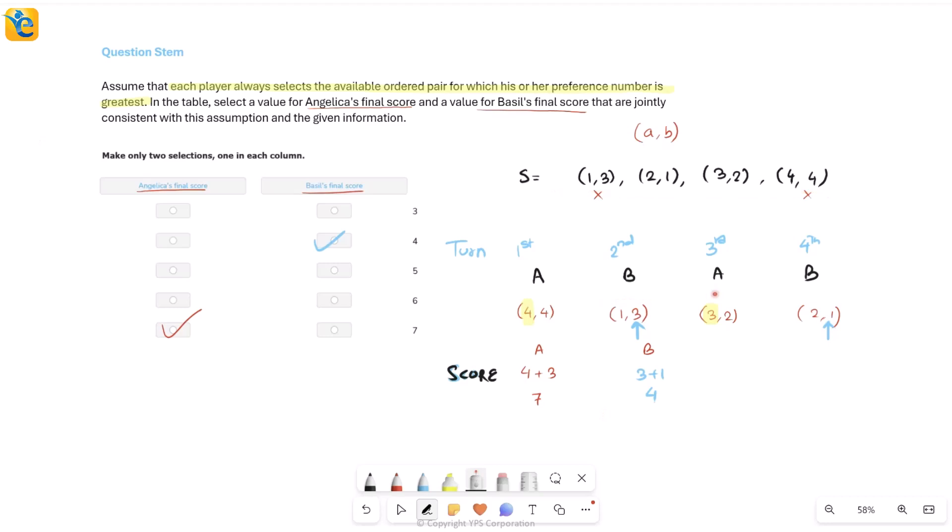What you required here was focus because it is possible that when you're looking at so many numbers, so many ordered pairs, you can by mistake read the second number for Angelica, the first number for Basil, or maybe take the first number sometimes and the second number another time just because of so many numbers. So if you're completely immersed in your question, you're completely just there, you're present, you will not make a mistake.